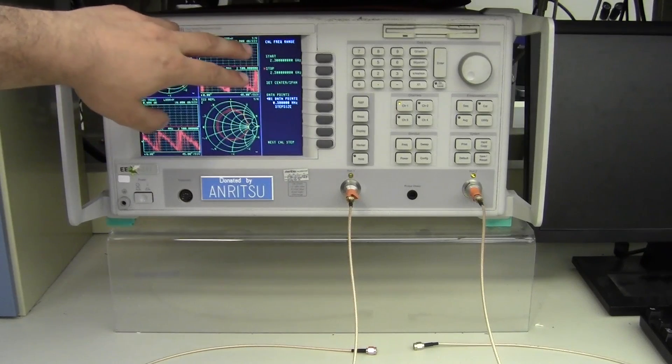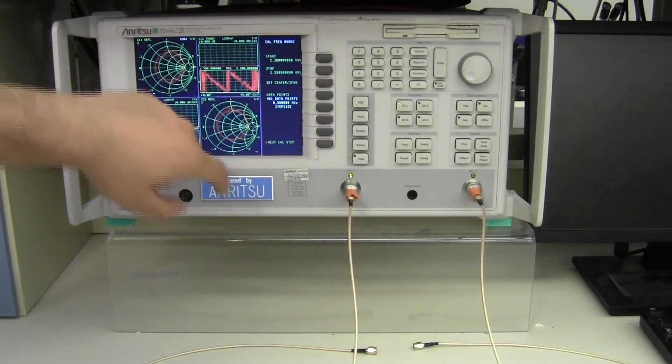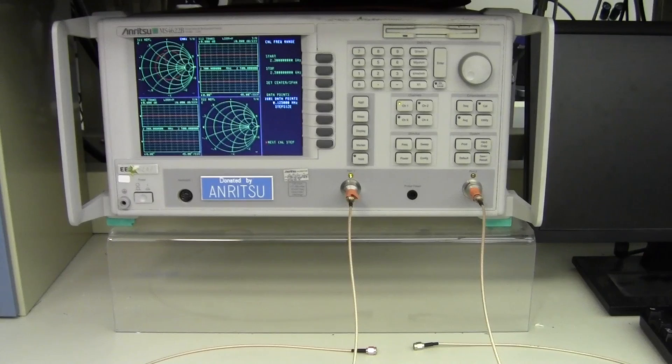Now once you update your frequency sweep, the data points will be shown as incorrect, but once you open that menu it updates and shows that you will be taking 1600 data points.